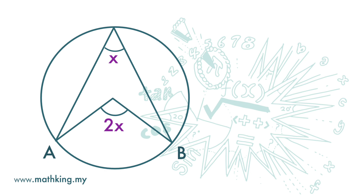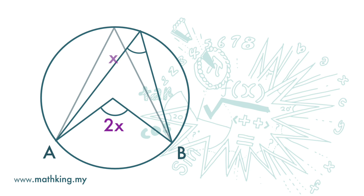Now let's look back at this first diagram. We can move the point on the circumference along the circumference. This will not change the size of the angle at the circumference, as we have learned earlier that angles subtended from the same arc are equal. So the rule still holds — the angle at the circumference is still x and the angle at the center is still 2x.